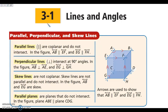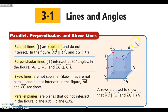Parallel lines are coplanar lines that will never intersect. It's going to be really important that we add this part — that they are coplanar — because you'll see why in just a second when we start talking about another type of line.